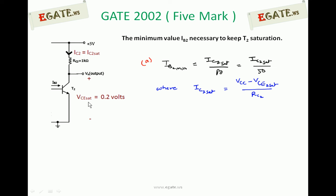V0 is equal to VCE saturation which is given as 0.2 volts. Whenever the transistor is in saturation maintaining 0.2 volts, the current flowing through this transistor is treated as IC2 saturation. IC2 saturation can be written as (VCC minus VCE saturation) divided by RC2, because the same current flowing through this resistor also flows through the collector of T2. VCC is 5 volts, VCE saturation is 0.2, and RC2 is 1 kilo ohm. So IC2 saturation is 4.8 milli amperes.